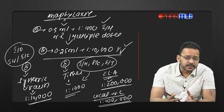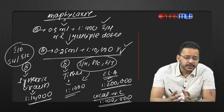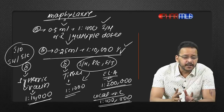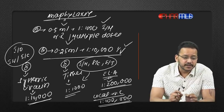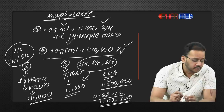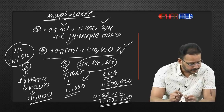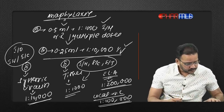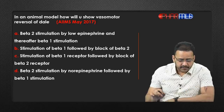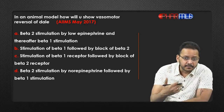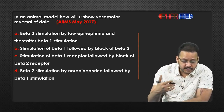Midodrine — how can it decrease blood pressure? Midodrine is a beta-3 agonist but it also acts upon beta-2 receptors. Because of beta-2 action, it can cause vasodilatation as well. Now, in an animal model, how will you show vasomotor reversal of Dale? This was a question from AIIMS May 2017.